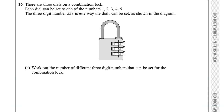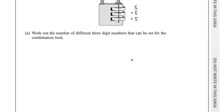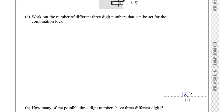Question 16 says there are 3 dials on a combination lock, each settable to 1, 2, 3, 4, or 5. Work out the number of different 3-digit numbers. Think of 3 separate spaces: each has 5 possibilities. Using the product rule, the total is 5 times 5 times 5 equals 5 cubed equals 125. Final answer: 125 for part A.